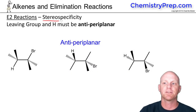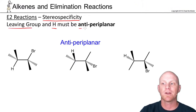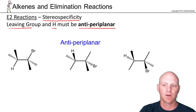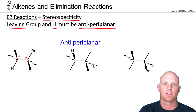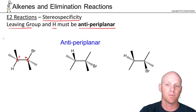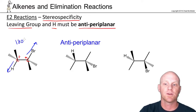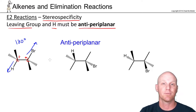Let's talk about the stereospecificity of an E2 reaction. It involves again that the leaving group and your hydrogen must be antiperiplanar. Back in the day when I took orgo, we called it anti-coplanar. Anti-coplanar means that the leaving group — bromine in this case — and the hydrogen on the beta carbon have to be 180 degrees apart.